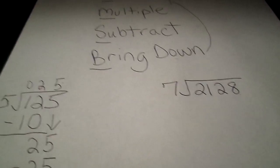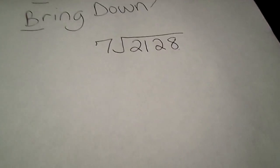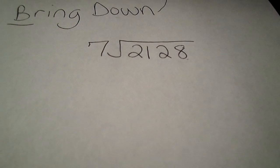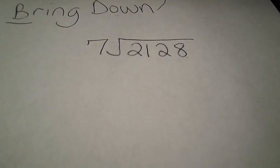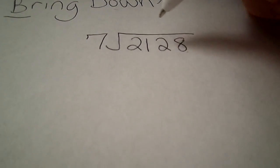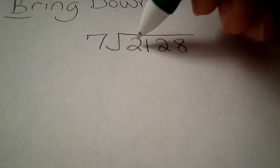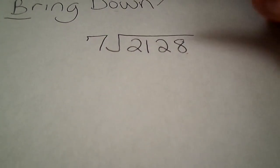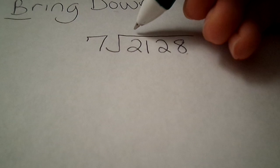And try another one. 2,128 divided by 7. Okay. Again, 7 can't go into 2 by itself. So this time instead of just putting a zero there I'm just going to leave it blank.